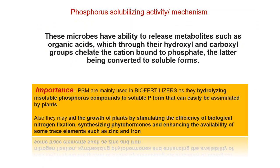What is the mechanism these microbes apply? These microbes have the ability to release some metabolites such as organic acids, through which the hydroxyl or carboxyl groups of the organic acids chelate the ions that are bound to phosphate, which is later converted to the soluble form. In simple terms, they release organic acids which help in conversion of insoluble phosphorus to the soluble form.